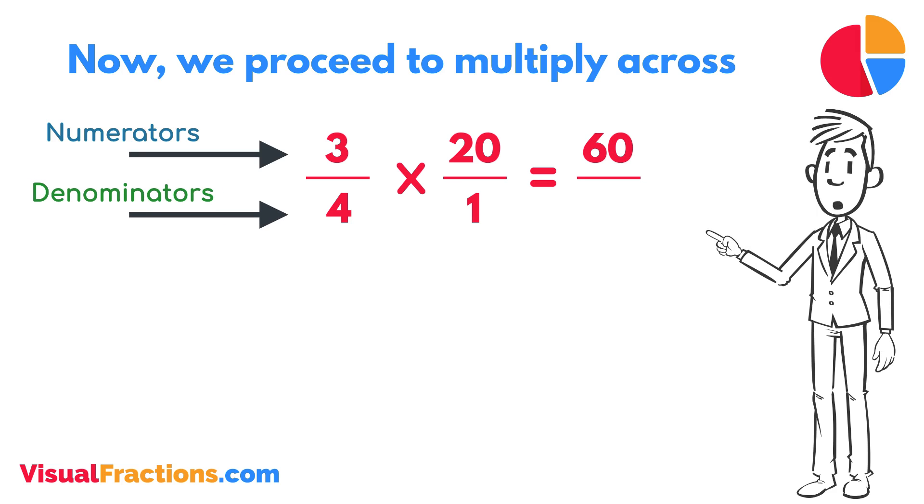Next, multiply the denominators, 1 times 4 equals 4. We now have a new fraction, 60 quarters. To find the final answer, divide the numerator by the denominator. So, 60 divided by 4 equals 15.